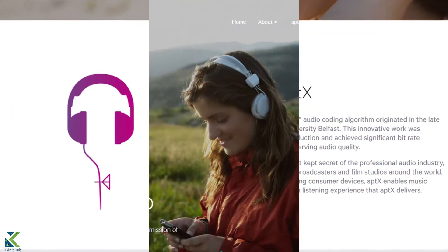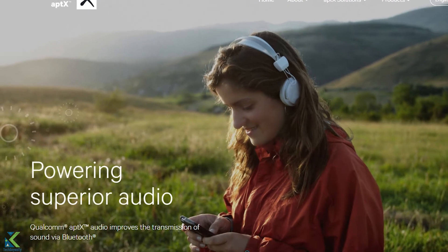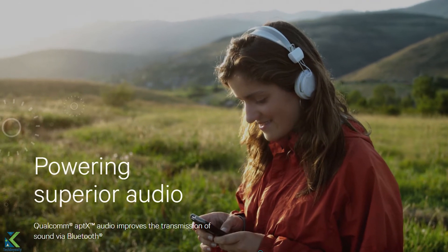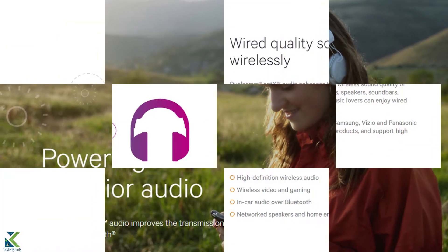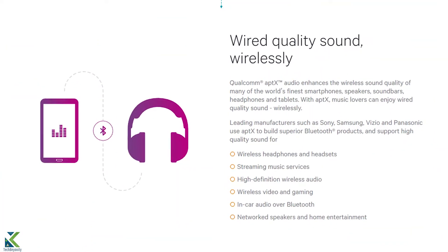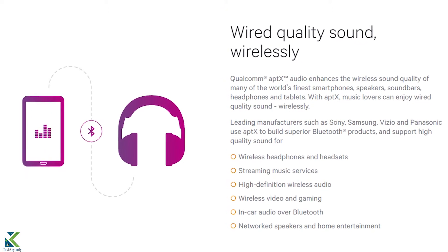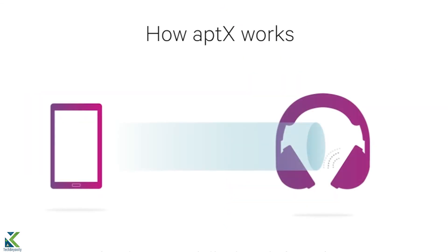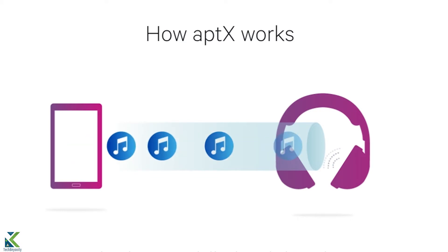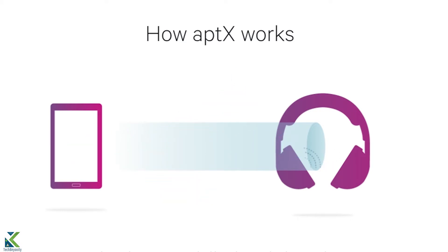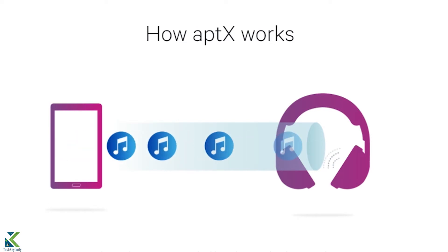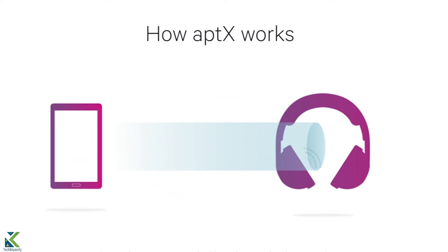The aptX codec has been the secret weapon of music industry, public broadcasters and film studios for many years because of its ability to deliver CD-like quality. Bluetooth connection is like a pipeline between devices limited by a maximum available bandwidth, so it's not always suitable for delivering high-quality audio.